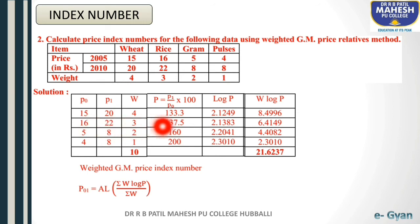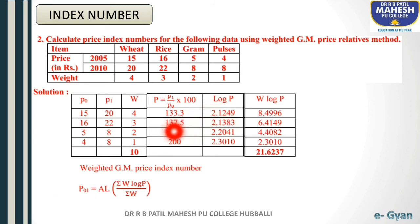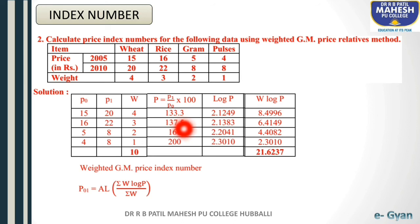Price relatives: 20 divided by 15 into 100 is 133.3; 22 divided by 16 into 100 is 137.5; 8 divided by 5 into 100 is 160; 8 divided by 4 into 100 is 200. After finding the price relatives, find the log values. Log of 133.3: digits are 3, so characteristic is 2; log of 1333 using the log table gives 1249, so log 133.3 is 2.1249. Log of 137.5: characteristic is 2; log table gives 1383, so log 137.5 is 2.1383.